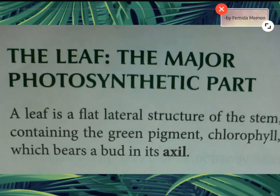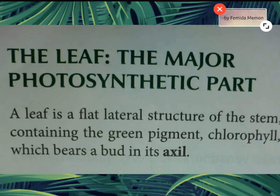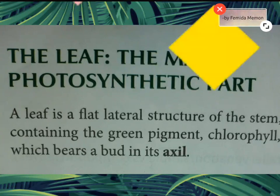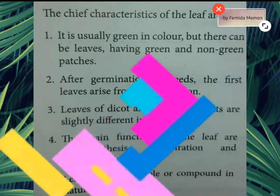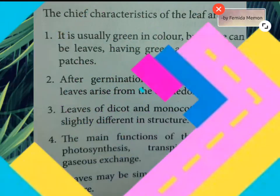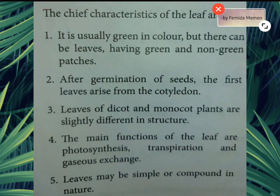A leaf is a flat lateral structure of the stem containing green pigment chlorophyll, which bears a bud in its axil. The chief characteristics of the leaf are: 1. It is usually green in color, but there can be leaves having green or non-green patches. 2. After germination of seeds, the first leaves arise from the cotyledon.